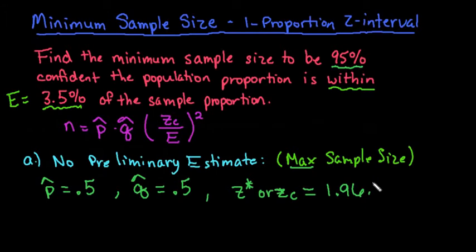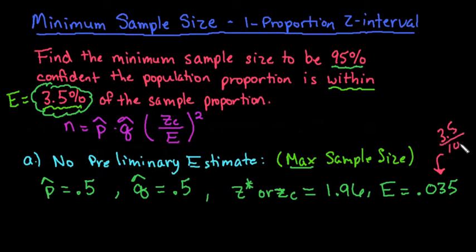The last thing we need to know is the error. The error is always the within part. Whatever your problem says, if you want to be within 2%, you would use 0.02. In this case, it says to be within 3.5%, so I would convert that to a decimal. Our error would be 0.035. Just in case you don't understand where this came from, I just took the 3.5% and divided it by 100. Make sure that you know how to write a percentage as a decimal.